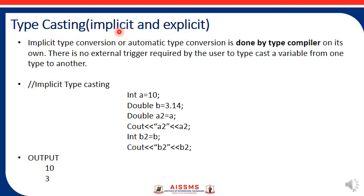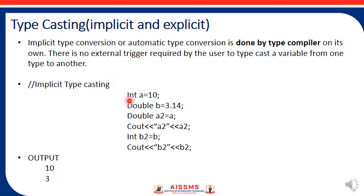For type casting, there are two methods: implicit type casting and explicit type casting. Implicit type conversion, or automatic type conversion, is done by the compiler on its own — there is no external trigger required by the user to type cast a variable from one type to another. Here we can see an example: 'a' has value 10, and double 'b' is 3.14.